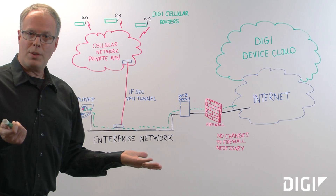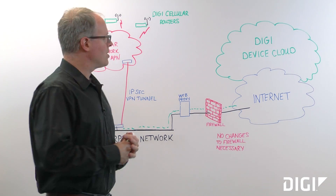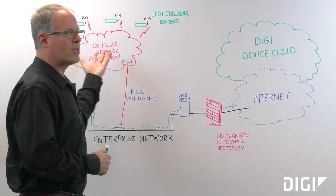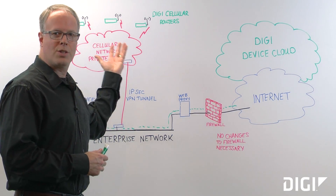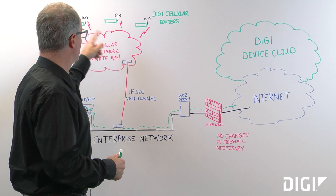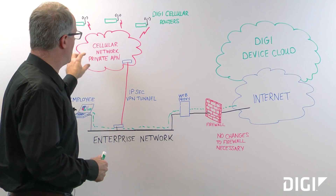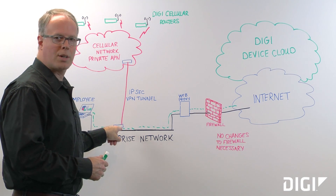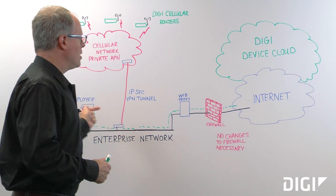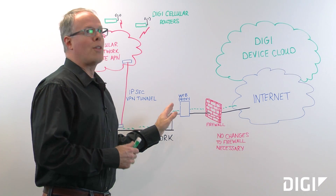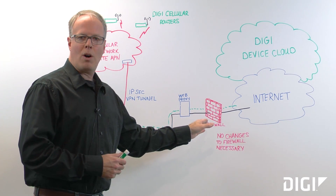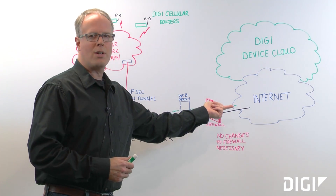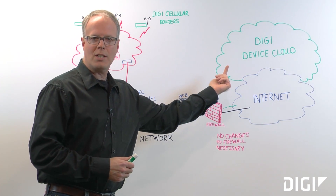The dilemma occurs if you want to bring a number of cellular routers online. If you're using a cellular private APN which terminates to your enterprise network, you would otherwise have to reconfigure your firewall in order for this traffic to get out to the internet and connect to Device Cloud.